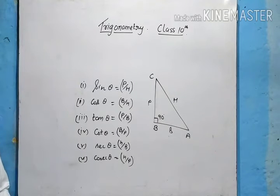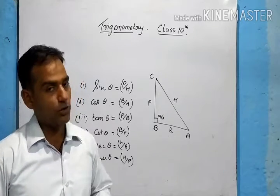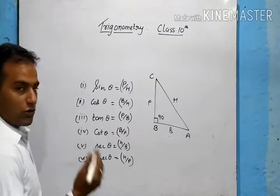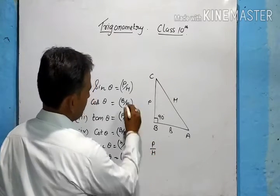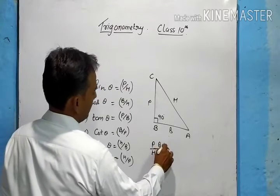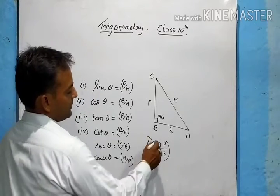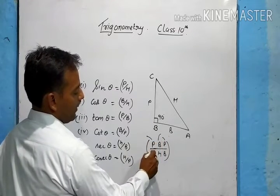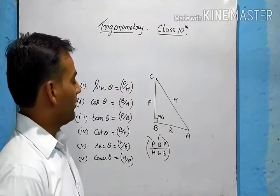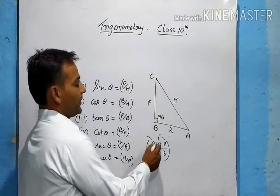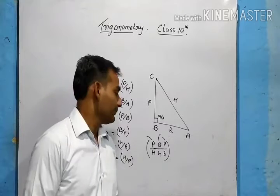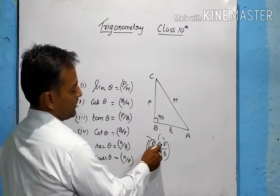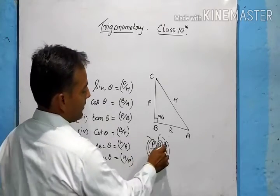For a shortcut to remember sin, cos, and tan: sin θ = P/H (perpendicular/hypotenuse), cos θ = B/H (base/hypotenuse), tan θ = P/B (perpendicular/base). Students use the mnemonic 'Pandit Badri Prashad Har Har Bole' — P/H, B/H, P/B — to remember these three ratios easily.